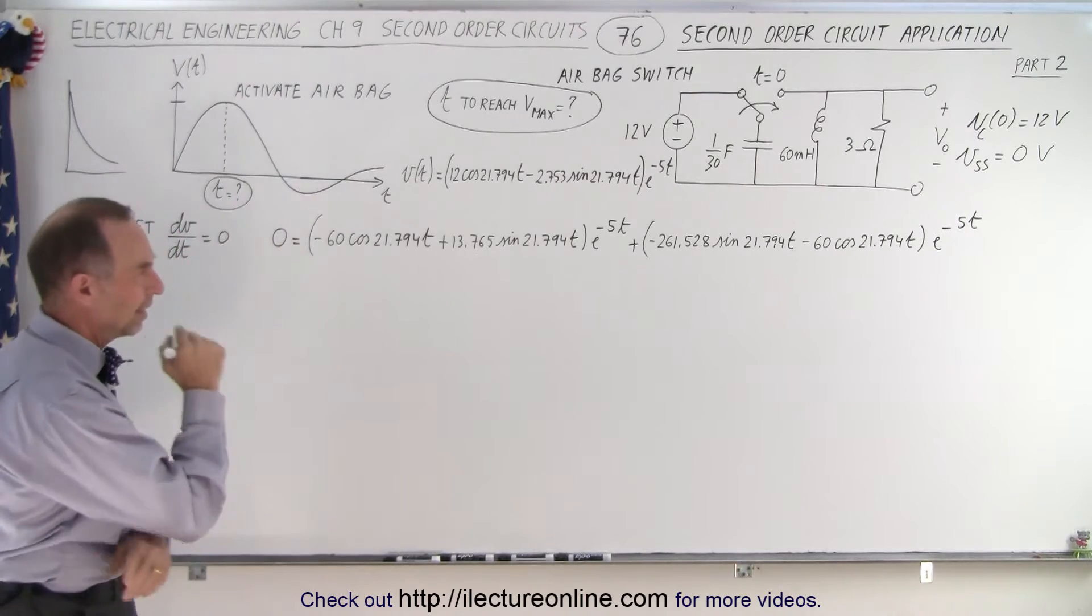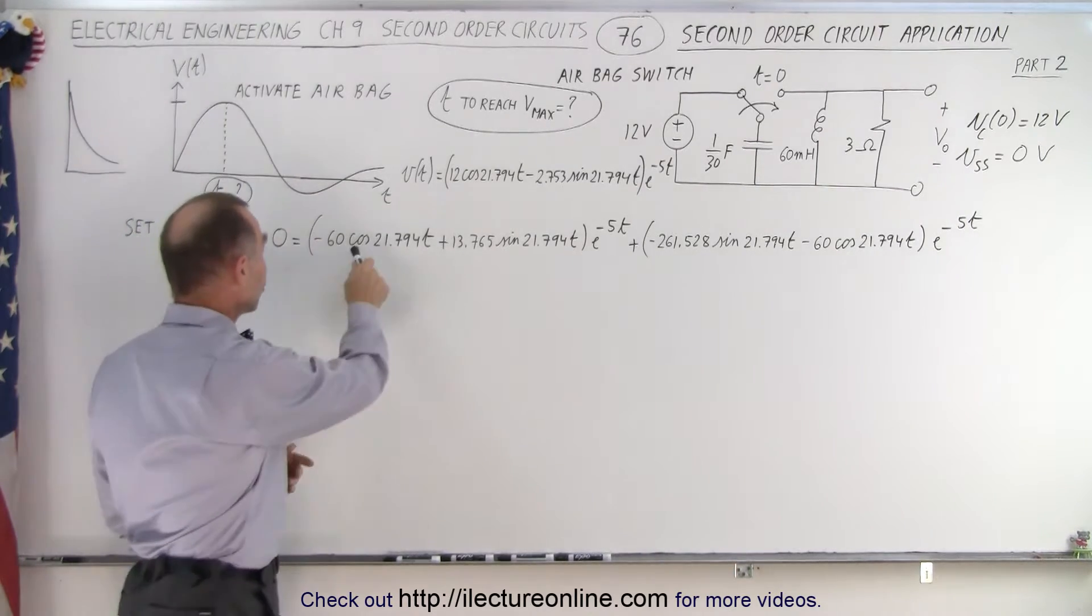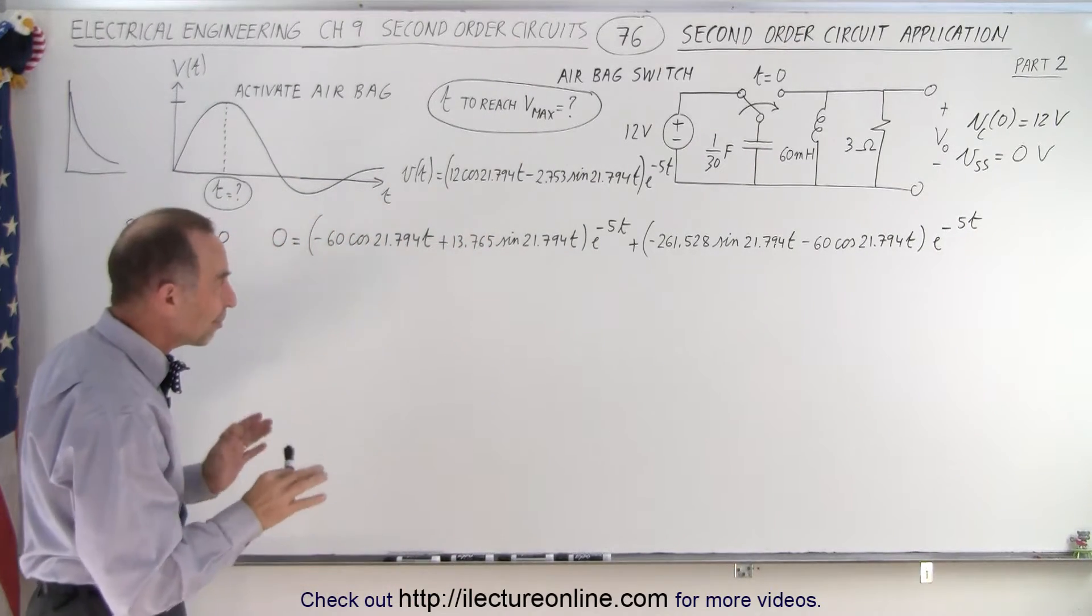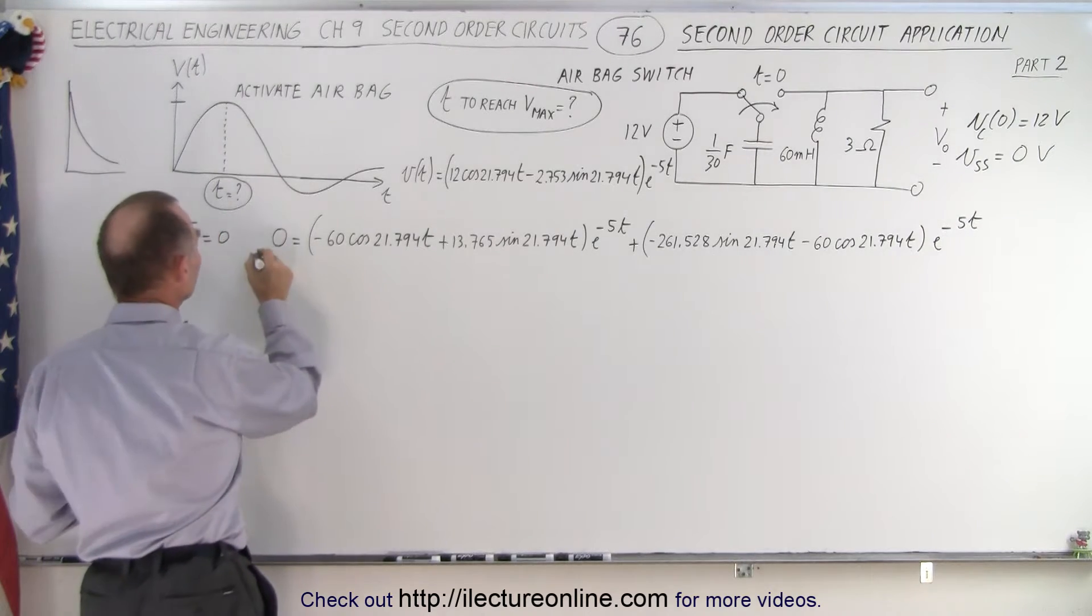So that's what we did here - we set the derivative equal to zero and now we solve for t. Now you may look at this and go, how in the world do we solve for t? Because we have a cosine, we have a sine, we have an e to the minus 5t.